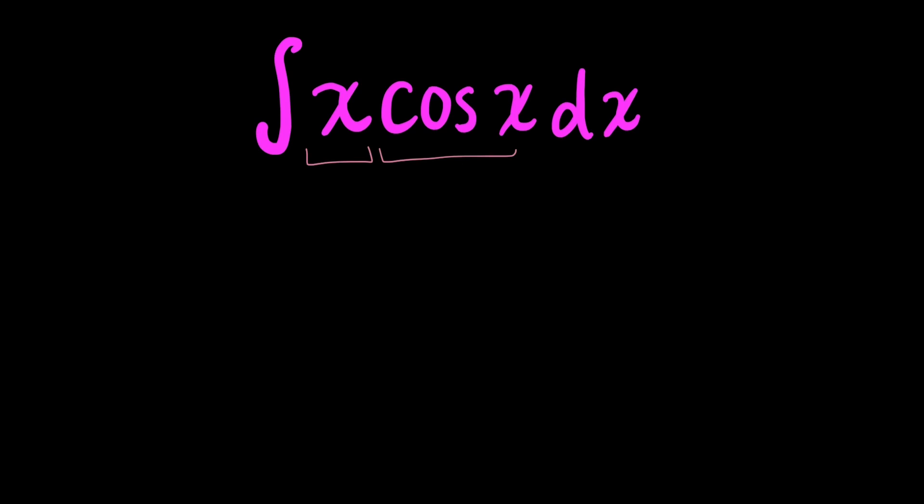So doing something like u substitution wouldn't work because we don't have a function and its derivative within that integral. So let's do integration by parts. To do integration by parts, we must apply this formula, which is uv minus the integral of vdu.